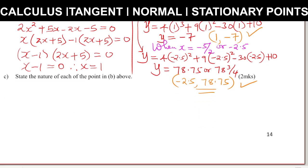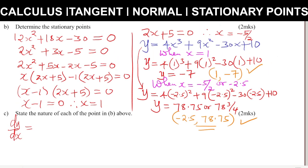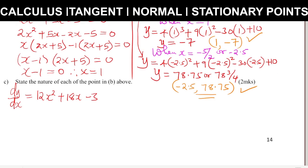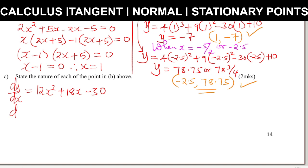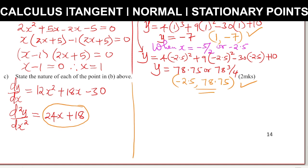Part C: state the nature of each of the points in B above. To determine the nature — whether maximum, minimum, or point of inflection — we find the second derivative. The first derivative was 12x² + 18x - 30. Differentiating again gives the second derivative d²y/dx² equals 24x + 18. This is what we use to determine the nature of each stationary point.